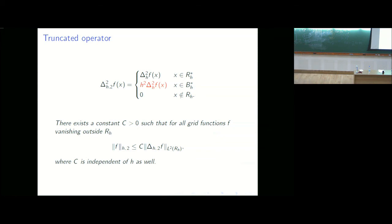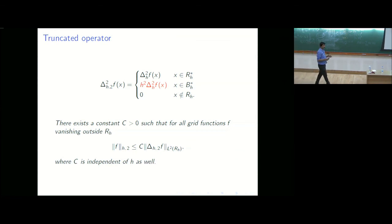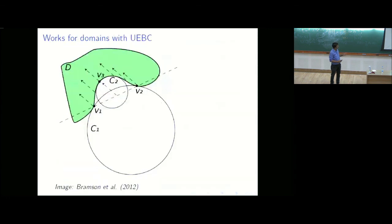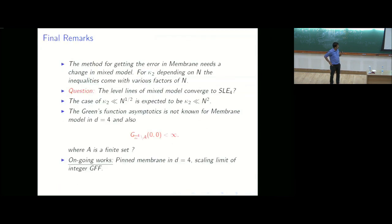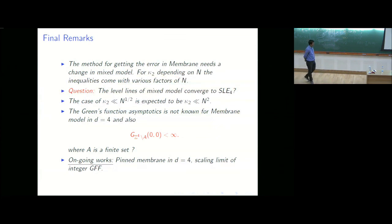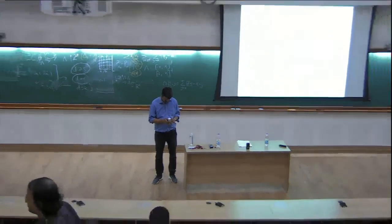On the boundary, the function is irregular and hard to control. So one does a rescaling on boundary points using a truncated operator Δ_H^2 Δ_H f(x). What one can show is that the L^2 norm of the function can be bounded by this truncated operator. The method works for domains satisfying a uniform exterior ball condition — needed to 'roll the ball' near the boundary. Those interested in open questions can discuss during lunch. Thank you.